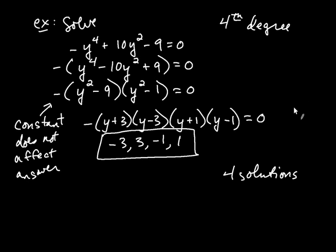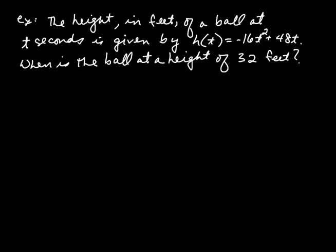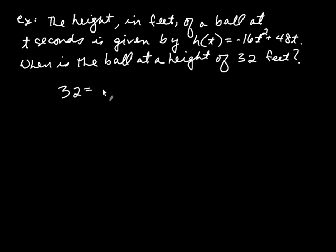Let's try an application to give us some motivation for factoring. The height in feet of a ball at t seconds is given by H of t equals negative 16t squared plus 48t. The question is: when is the ball at a height of 32 feet? Since the left-hand side represents the height, we replace it with 32, giving us 32 equals negative 16t squared plus 48t.